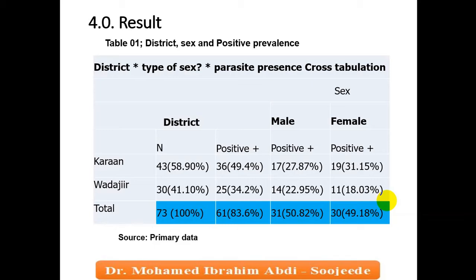In the results, Table 1 compares three parameters: district, sex of sheep, and positive parasite prevalence, using a cross-tabulation table. The total sample number was 73. The positive number was 61, which means a prevalence of 83.6%.